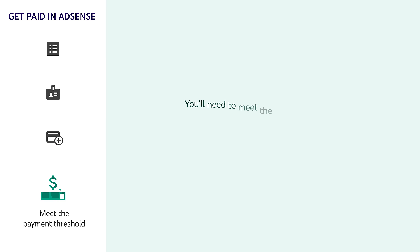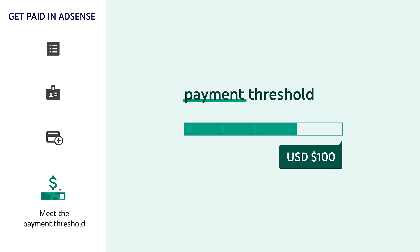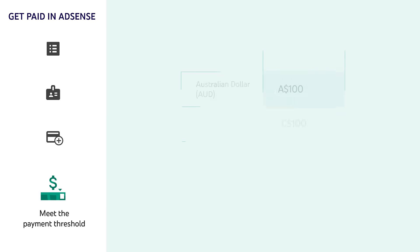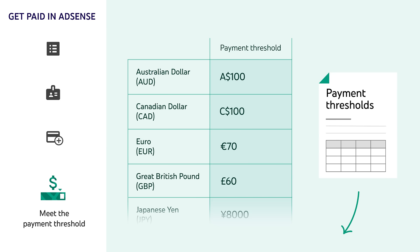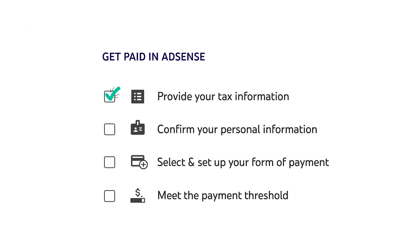And finally, you'll need to meet the payment threshold to receive payment. The payment threshold is the amount your account balance has to reach before you can get paid. This is 100 US dollars for people in the US, but the amounts vary depending on your location and currency. To see what your payment threshold is, check out the Help Center article linked in the description. To recap, there are four steps to getting paid: providing your tax information, confirming your personal information, selecting and setting up your form of payment, and meeting the payment threshold. Note that these steps can take some time to complete. If you ever want to check your progress in the payment setup process, you can always check the Monetization tab in YouTube Studio.